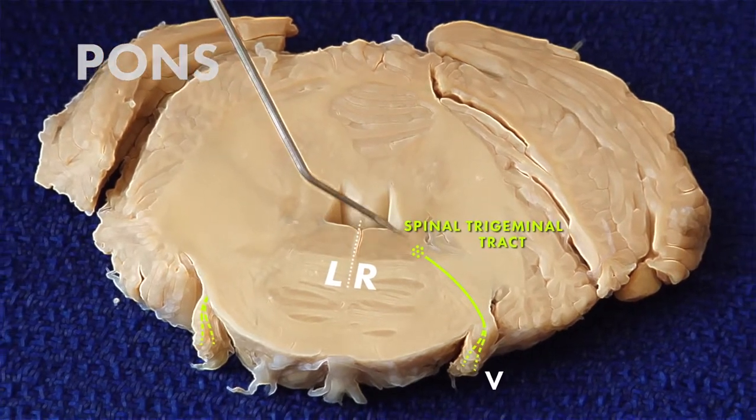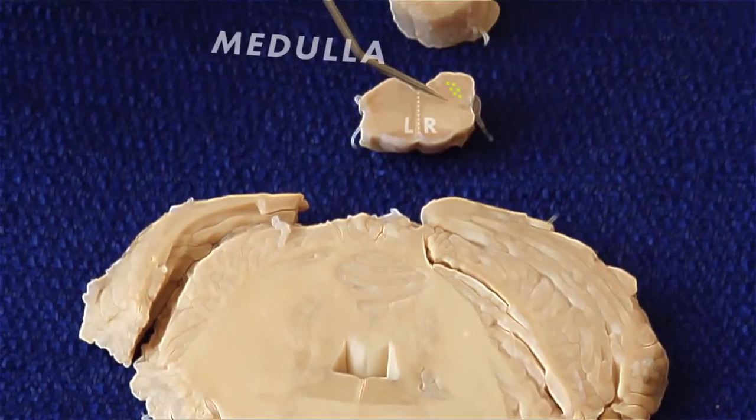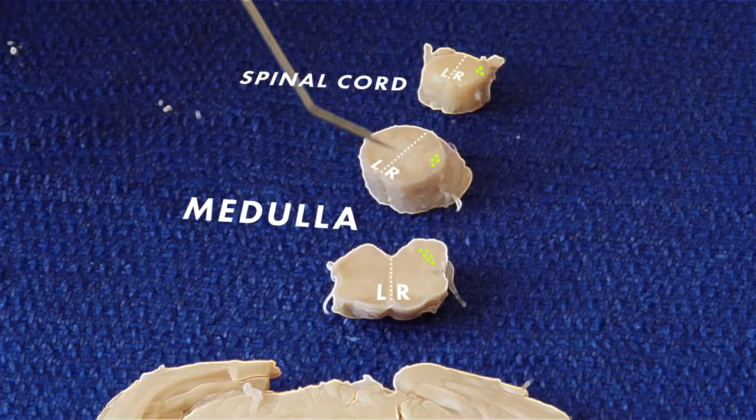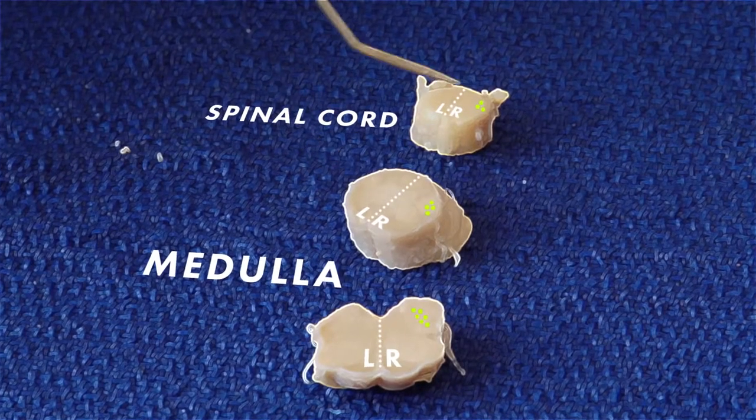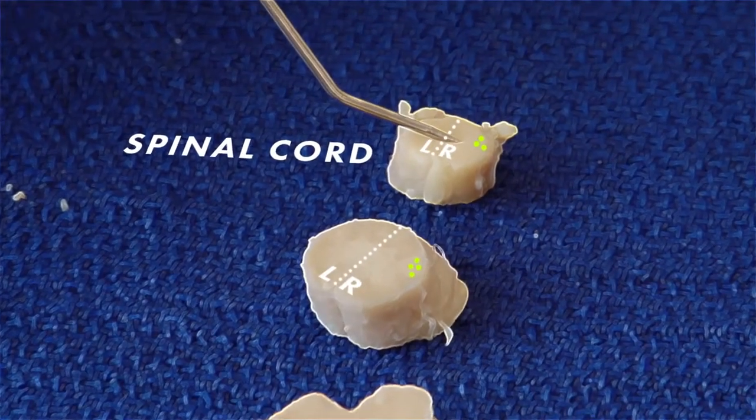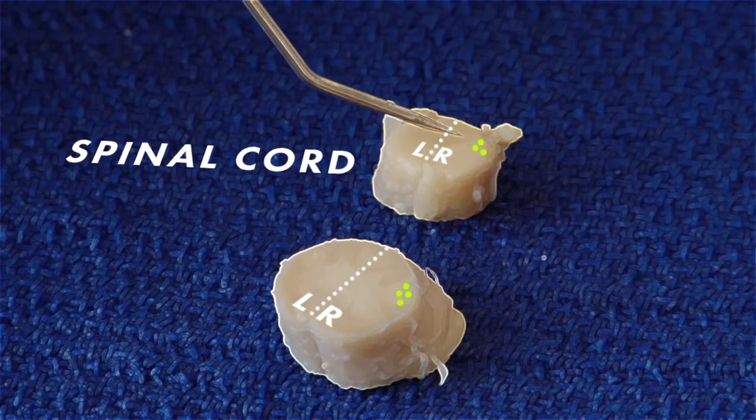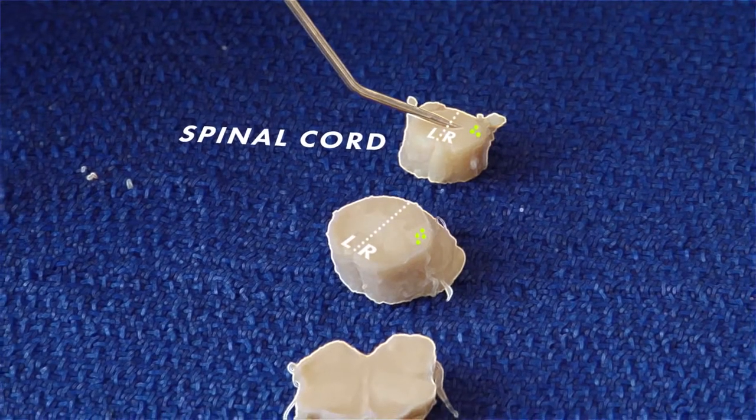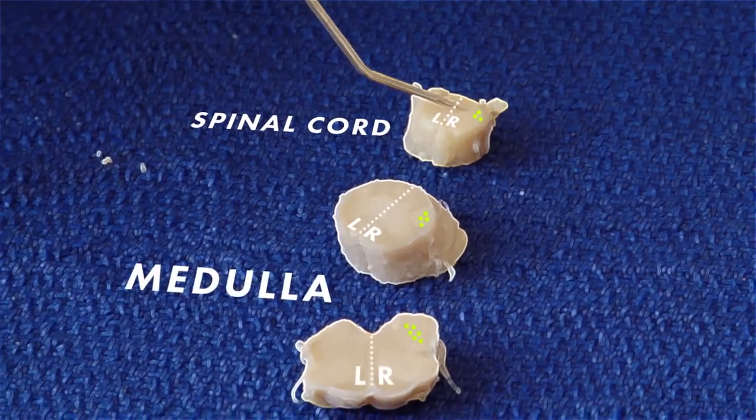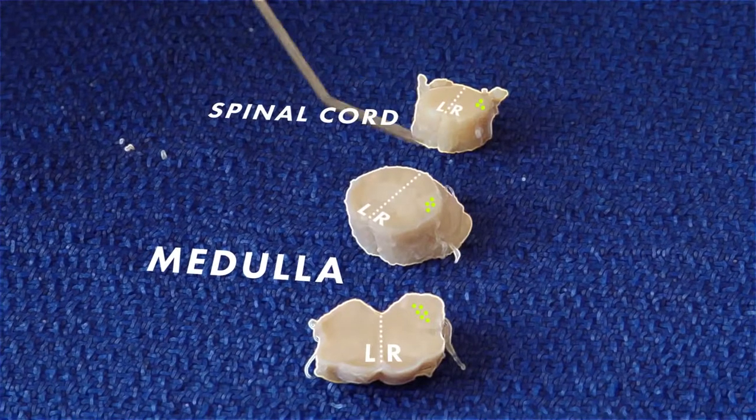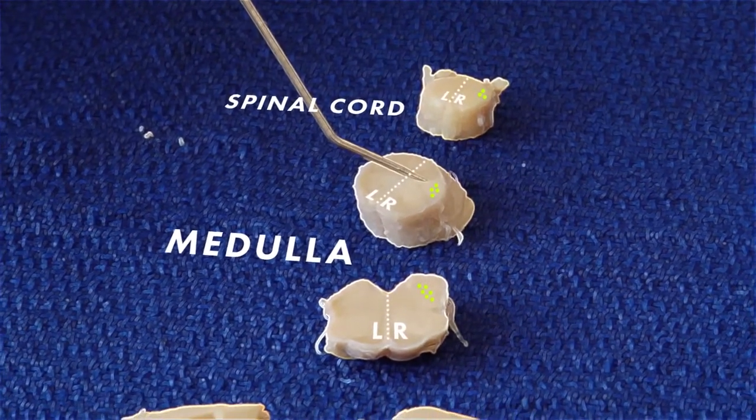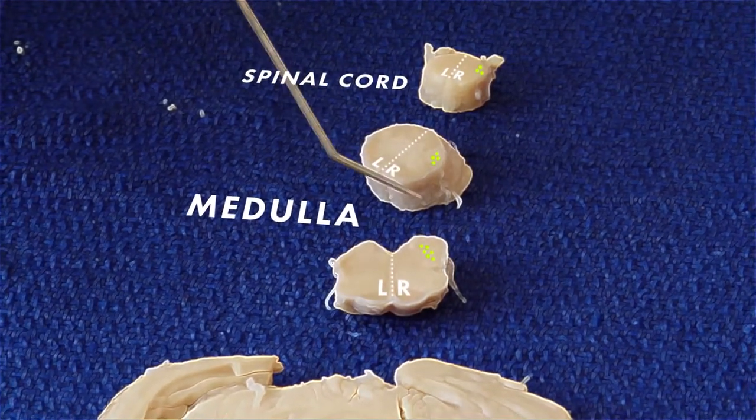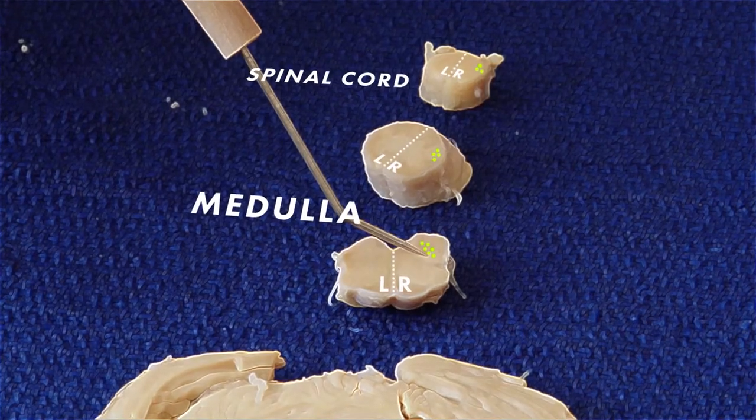They're going back down through the medulla. We're still on the right side. Back down through the medulla, down near the level of the decussation, even down to the high cervical spinal cord. And there, in these areas, you will find the second neuron involved in crossing to the other side. So the decussation of this trigeminal thalamic tract occurs all the way from the middle of the pons all the way down to the high cervical spinal cord.